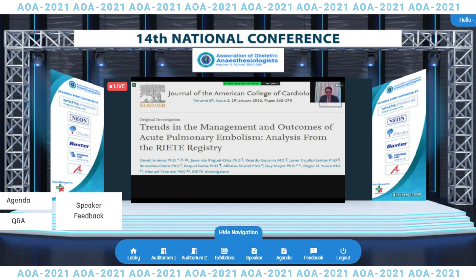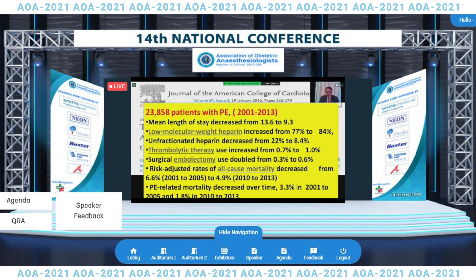In 2016, an analysis from the RIETE registry published in the Journal of the American College of Cardiology investigated trends in management and outcomes of acute pulmonary embolism. Over 20,000 patients were followed from 2001 to 2013. The mean length of stay decreased from 13.6 to 9.3 days over 13 years. Low molecular weight heparin use increased while unfractionated heparin use decreased. Thrombolytic therapy use increased and surgical embolectomy doubled. Risk-adjusted all-cause mortality decreased from 6.6% to 4.9%, and PE-related mortality decreased from 3.3% to 1.8%—more than a 50% decrement.